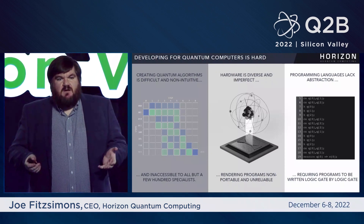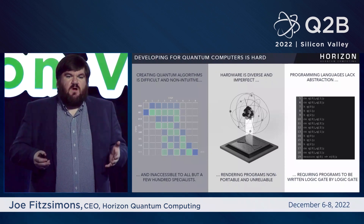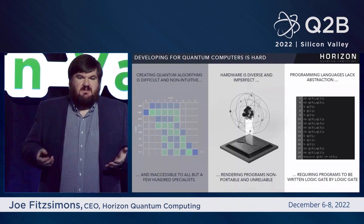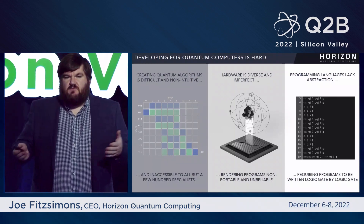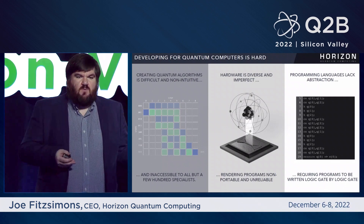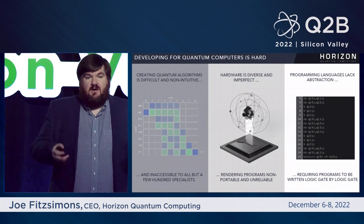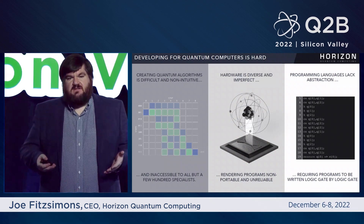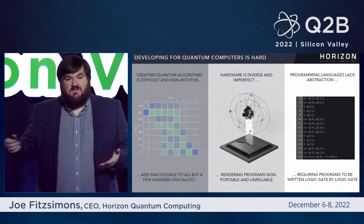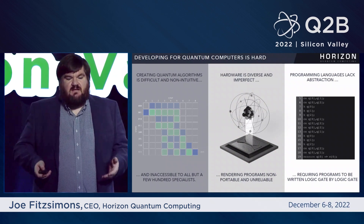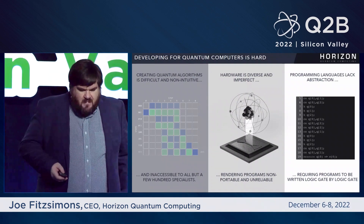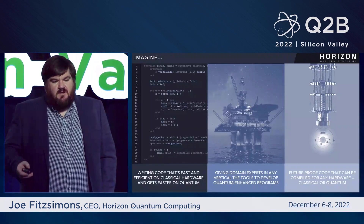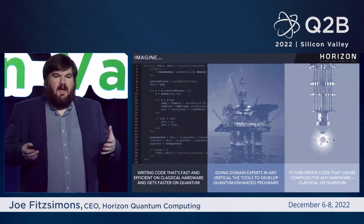This is partly because quantum computing does not work the way we work. When we try to do calculations with pen and paper, it translates pretty well to how a conventional computer works, but it does not translate at all well to how a quantum computer works. We don't take advantage of superposition of ourselves doing different kinds of calculations in order to get an advantage. So how can you get to a point where that becomes easier?